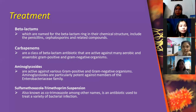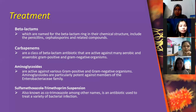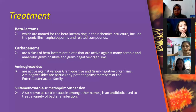Lastly, sulfamethoxazole-trimethoprim suspension, also known as cotrimoxazole among other names, is an antibiotic used to treat a variety of bacterial infections. It is active against a broad spectrum of gram-positive bacteria such as Staphylococcus aureus, gram-negative bacteria, and protozoans. However, it is inactive against anaerobes, Treponema pallidum, Mycobacterium tuberculosis, Mycoplasma species, and Pseudomonas aeruginosa.